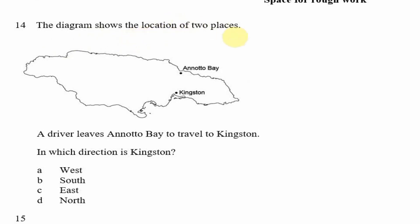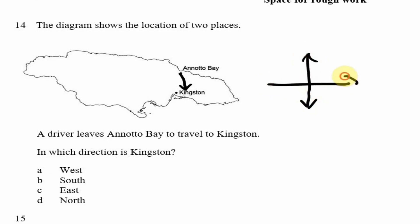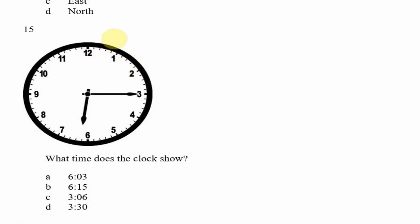Question 14: The diagram shows the location of two places — Anato Bay and Kingston. A driver leaves Anato Bay to travel to Kingston. In which direction is Kingston? Recalling the map directions — north, south, east, west — when you leave Anato Bay you are going south to Kingston. So our answer is option B, south.